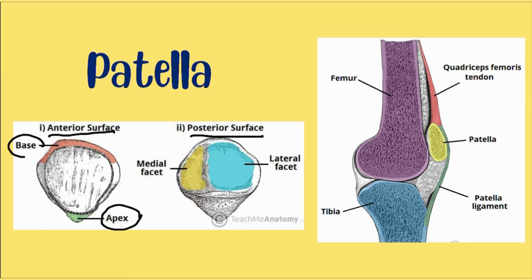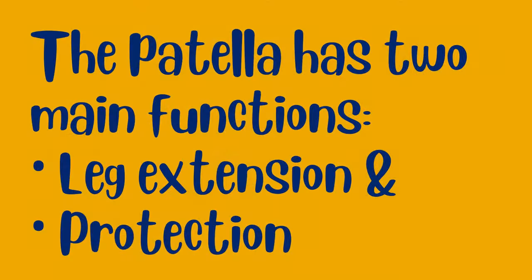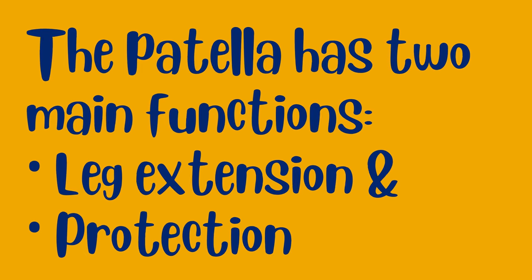The apex of the patella is situated inferiorly and is connected to the tibial tuberosity by the patellar ligament. The posterior surface of the patella articulates with the femur and is marked by two facets: the medial facet articulates with the medial condyle of the femur, and the lateral facet articulates with the lateral condyle. The patella has two main functions: leg extension and protection of the knee joint.